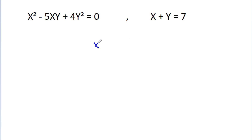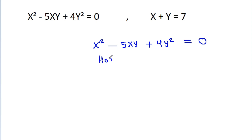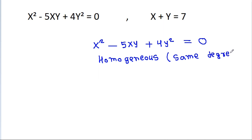So we have x squared minus 5xy minus 4y squared is equal to 0, and it is a homogeneous equation. Homogeneous means same degree. Degree of x is 2, degree of y is 2, and degree of xy is also 2, since 1 plus 1 is 2.